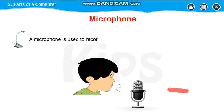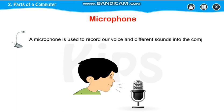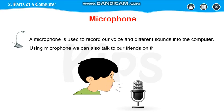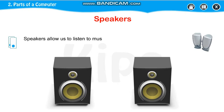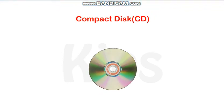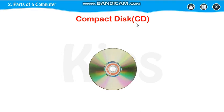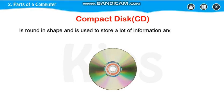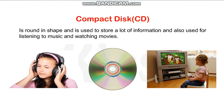The microphone is used to record your sound and voice — like I am recording my voice in a microphone. Speakers allow us to listen to music; you are listening to my voice through speakers while I record through the microphone. Then there is the CD — compact disc. C means compact, D means disc. It is round in shape and used to store a lot of information, like listening to music and watching movies.